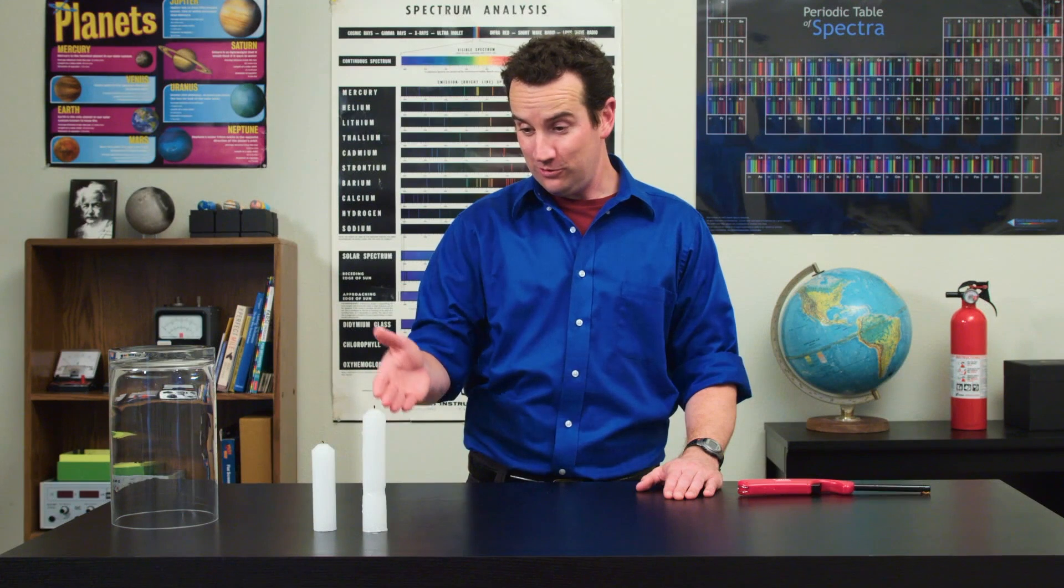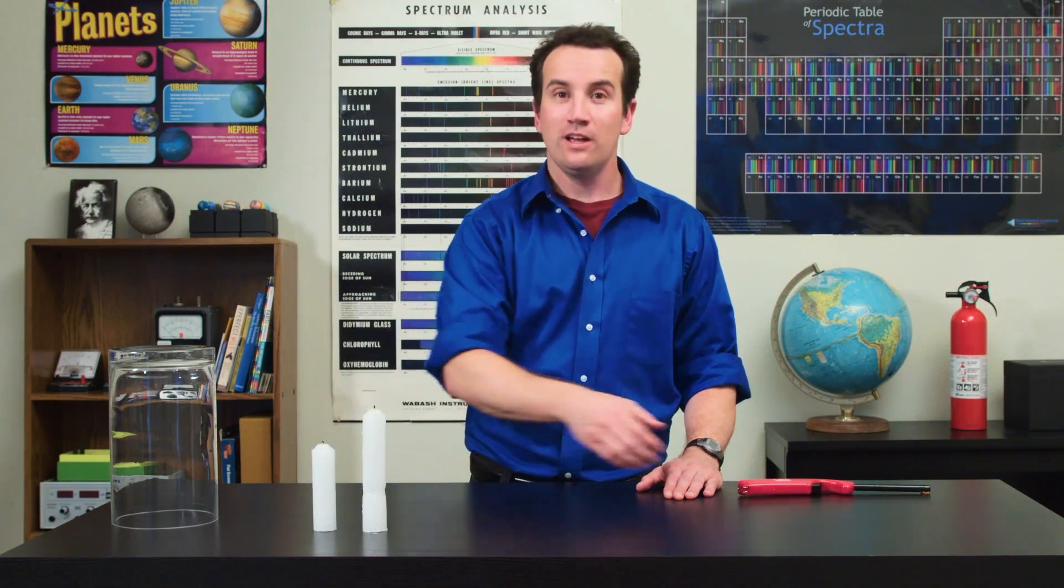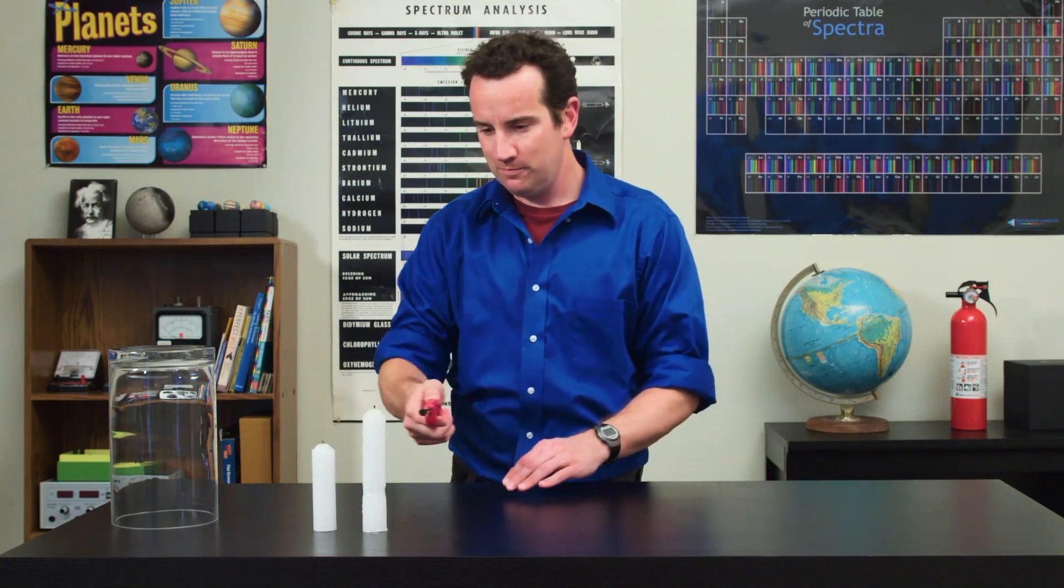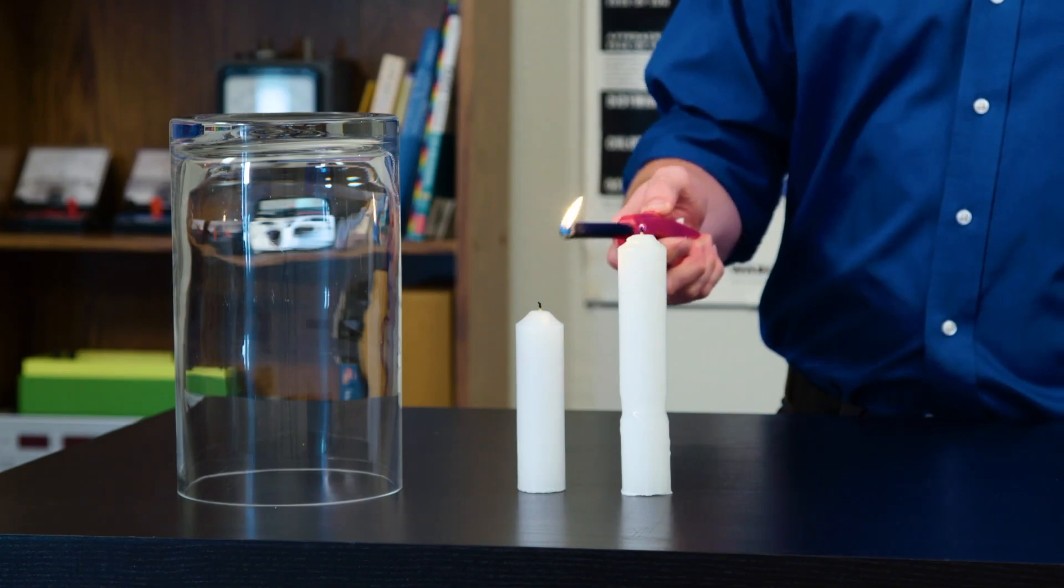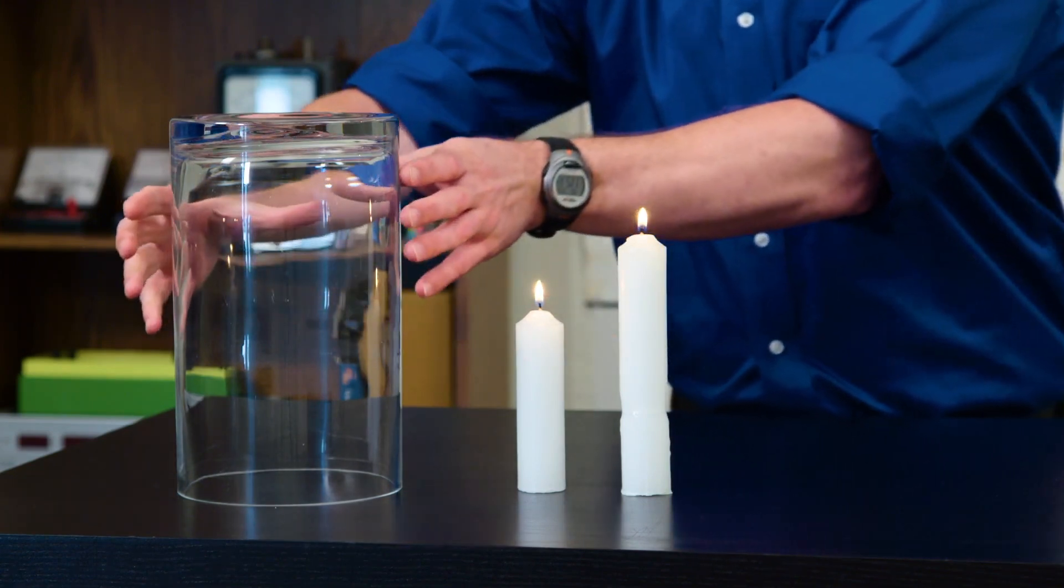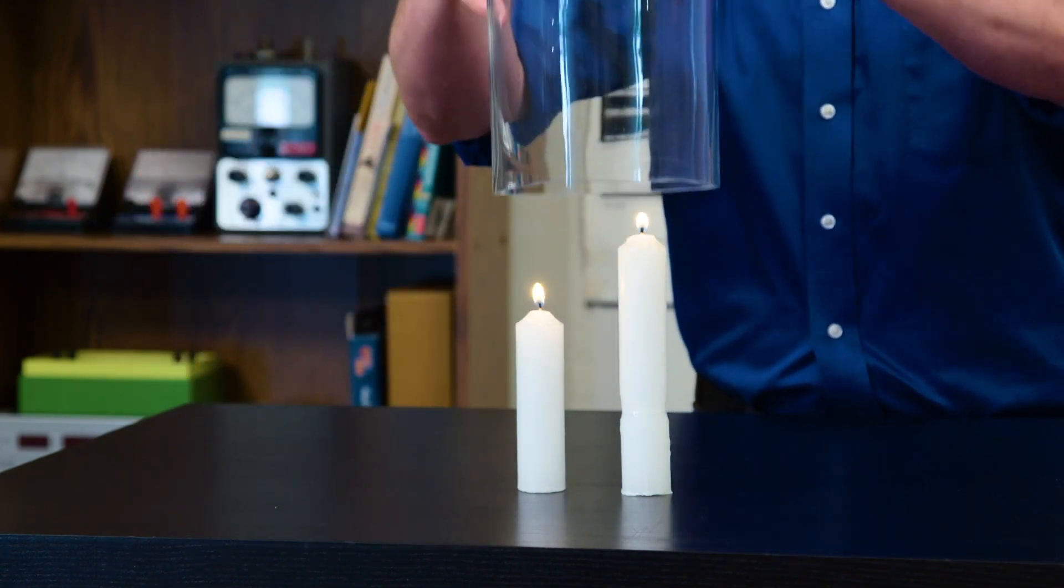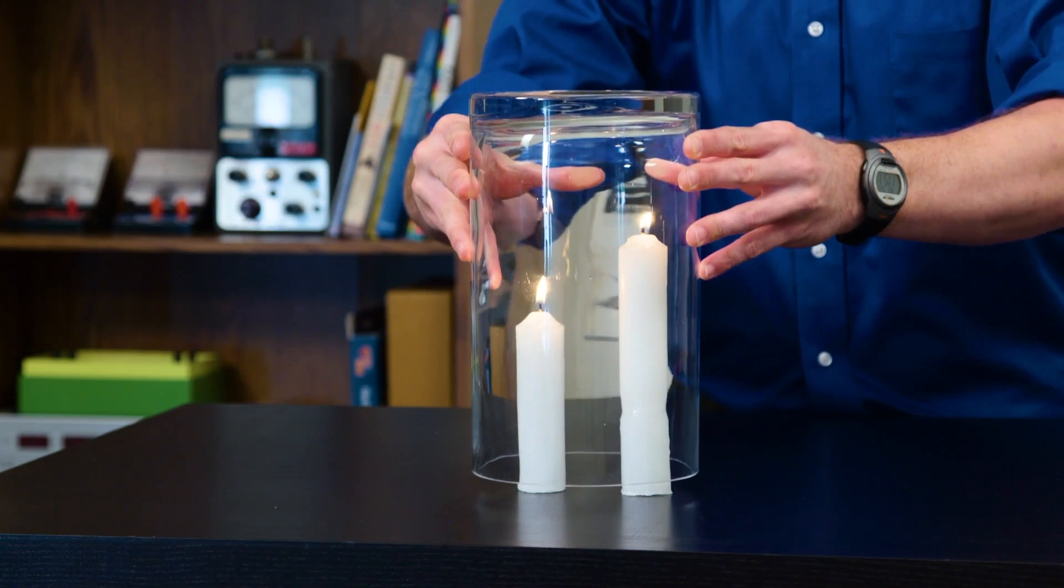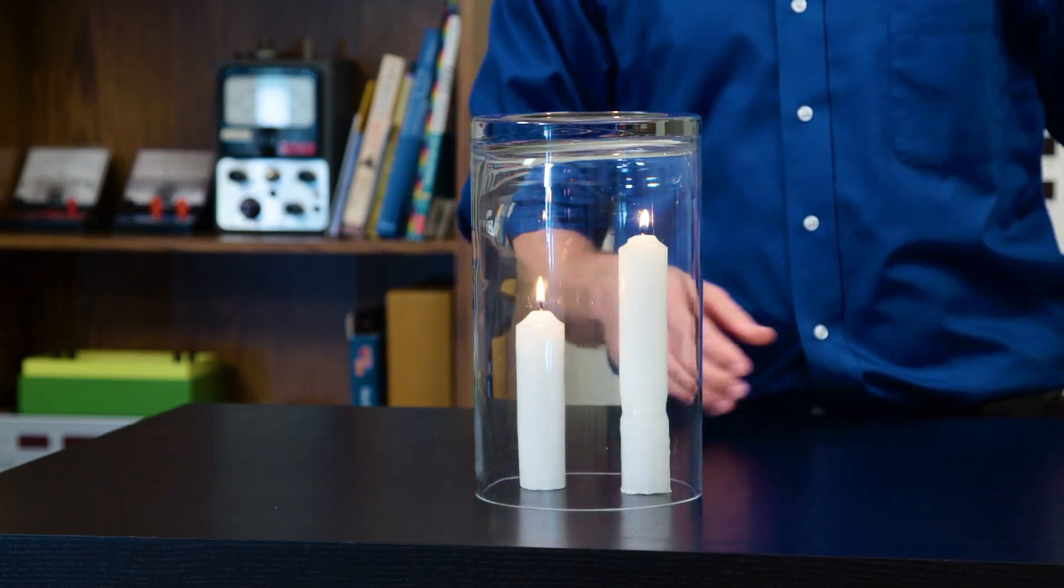Take two candles, a tall one and a short one, and light them. And place them in a jar. One of them will go out before the other. Can you guess which one it will be?